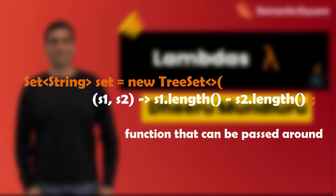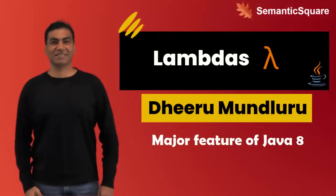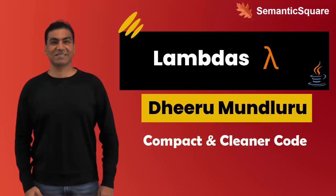A lambda is essentially a function which can be passed around. It is not associated with any class — it is simply a function by itself, or in familiar terminology, a method by itself. Lambdas are considered one of the most important features added in Java 8, and with that Java now has some elements of functional programming. Lambdas enable writing faster, more compact, and cleaner code.